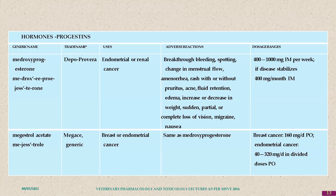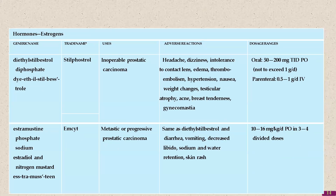Common side effects include breakthrough bleeding, spotting, and changes in menstrual flow. Megestrol acetate is a progesterone analogue used in breast or endometrial cancer. Estrogen analogues like diethylstilbestrol diphosphate are used in inoperable prostatic carcinoma, with side effects including dizziness, edema, thromboembolism, acne, breast tenderness, and gynecomastia.